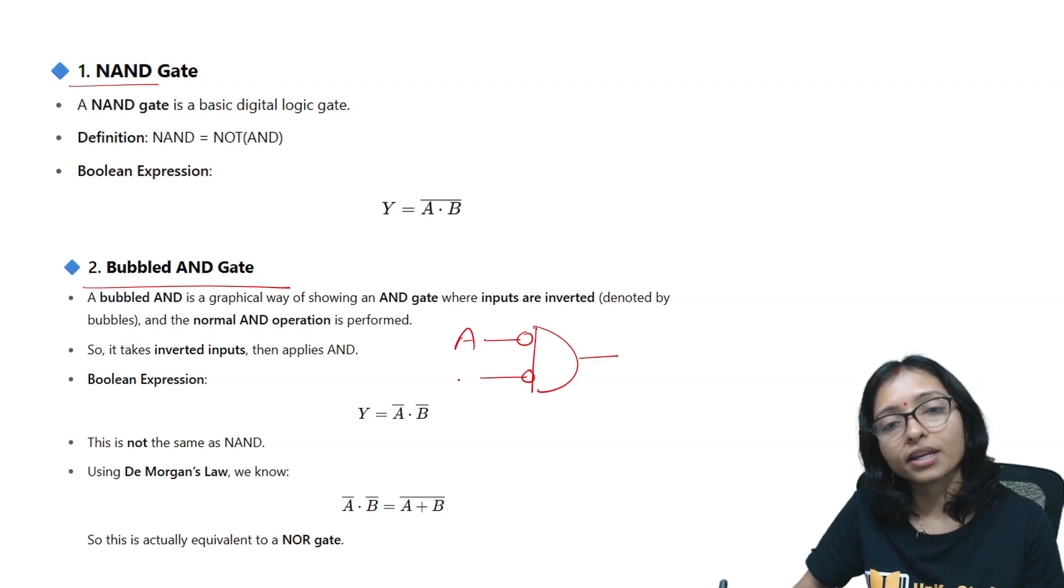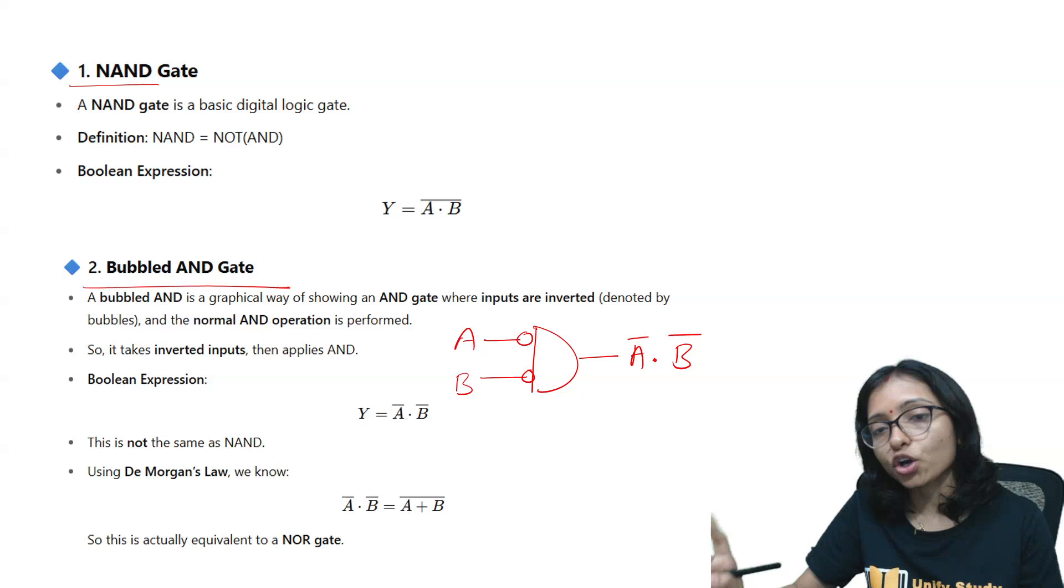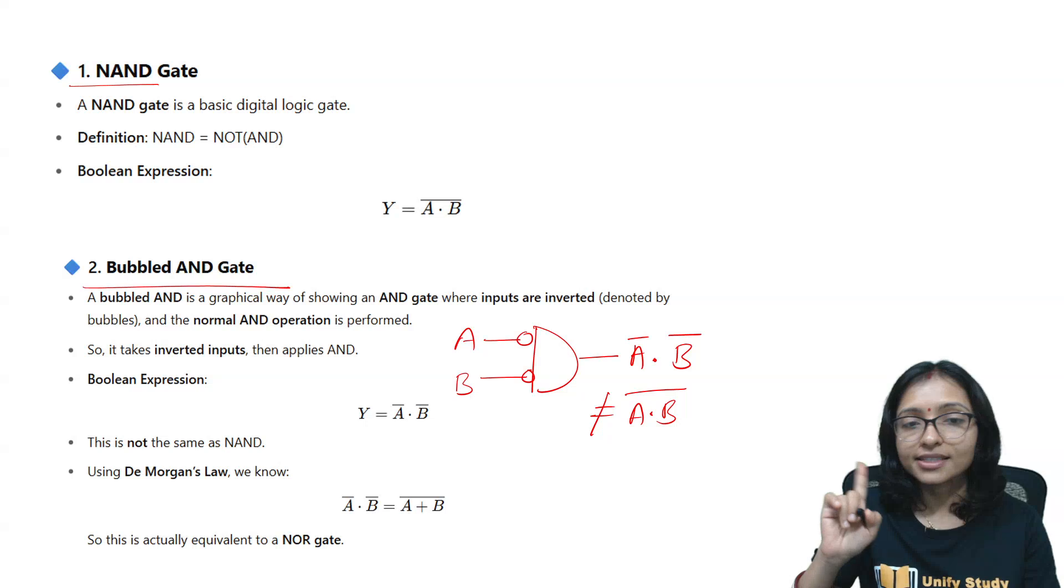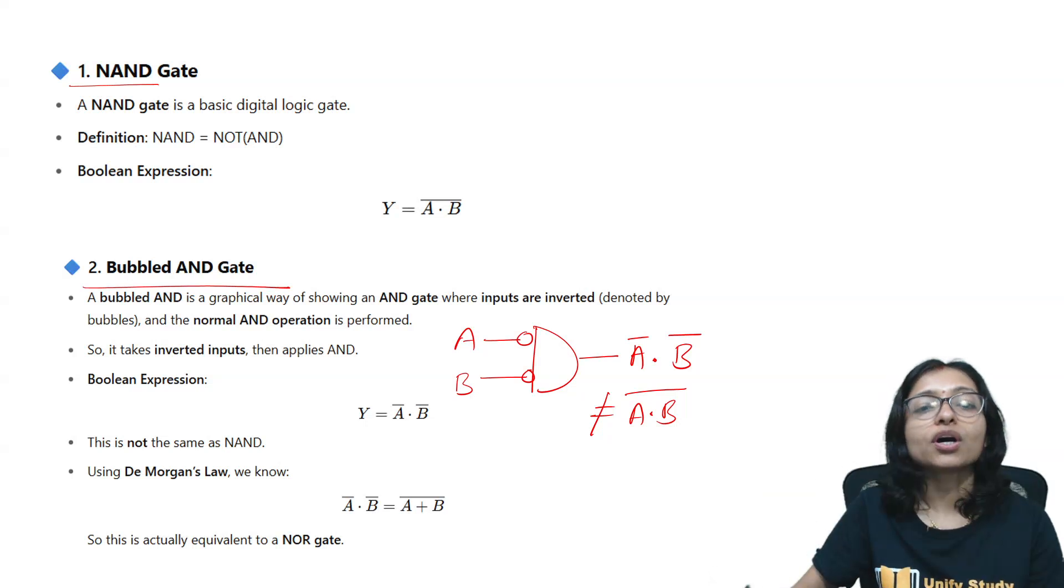So here whenever I am giving input AB then actually I am getting here A bar B bar. A bar dot B bar, it is not equivalent to A dot B whole bar. This is not same, right. So A bar dot B bar is not equivalent to AB whole bar.